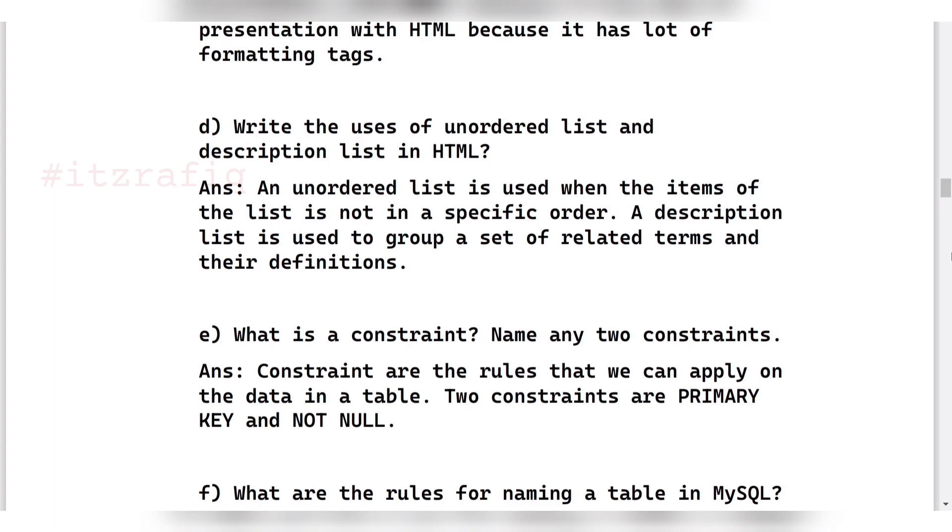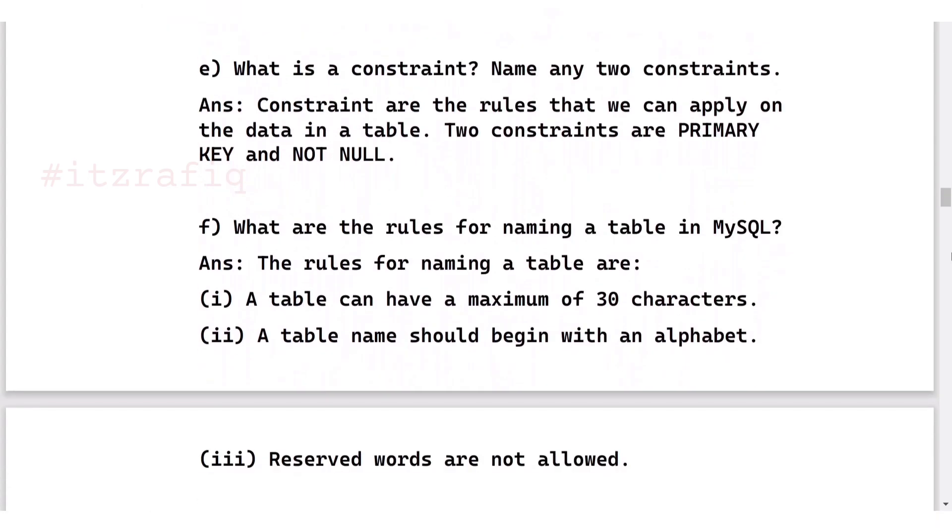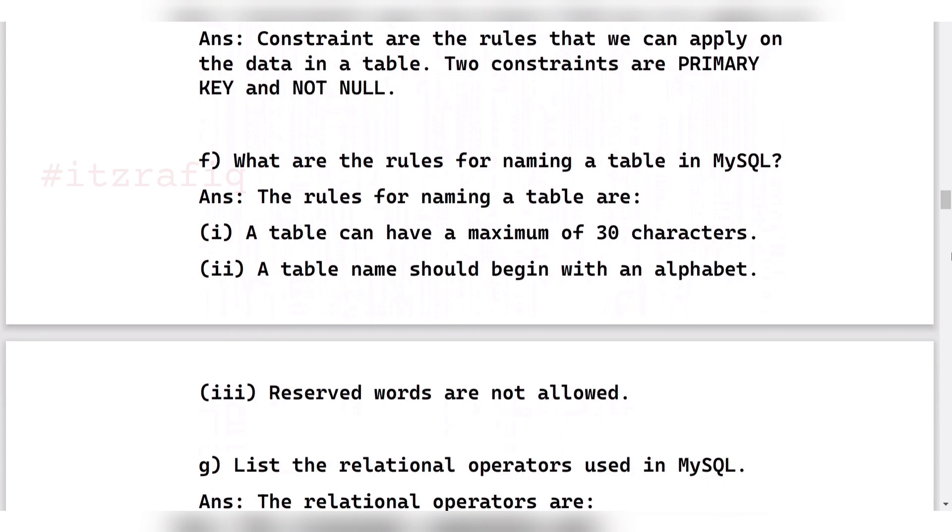What is constraint? Constraints are the rules that we can apply to the data in a table. For example, primary key and not null. What are rules for naming a table in MySQL? You can write these rules: table name can have maximum 30 characters, a table should begin with an alphabet, reserved words are not allowed.